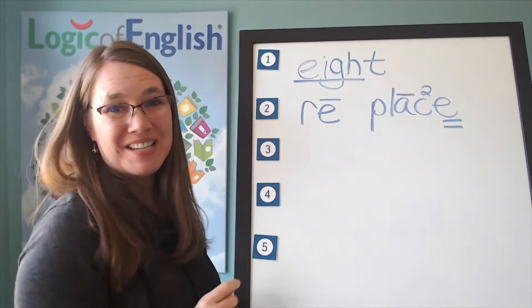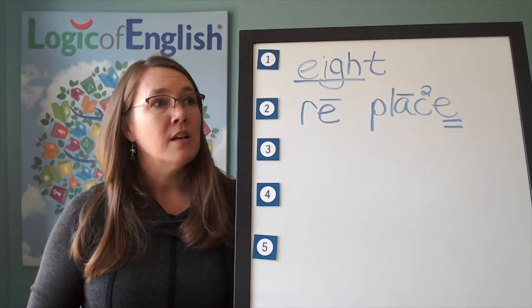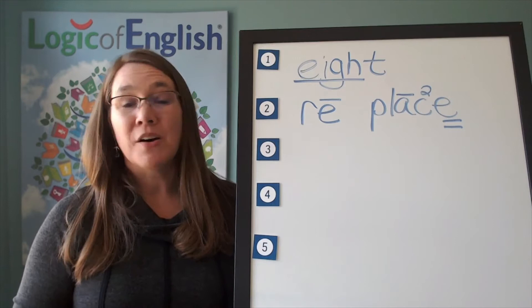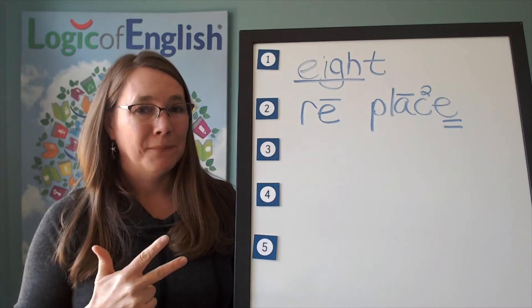The next word is gem. There is a gemstone in the ring. Gem. Go ahead and sound out gem. All right. The first sound is J. G-J. E-M. Got it? Gem.